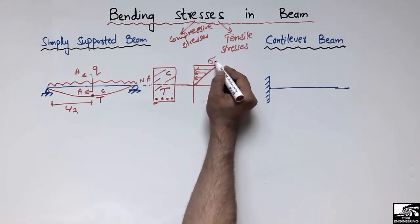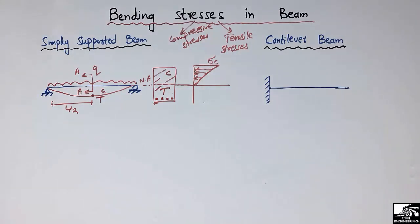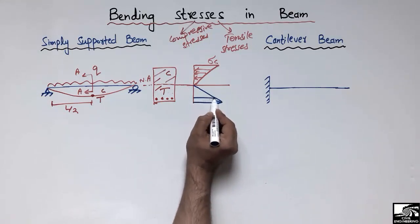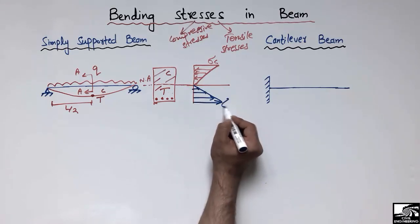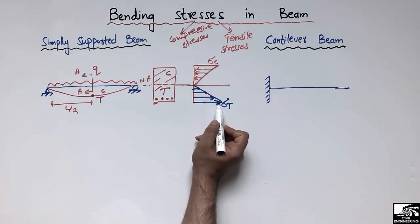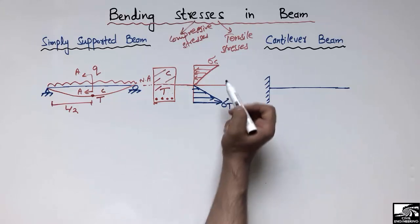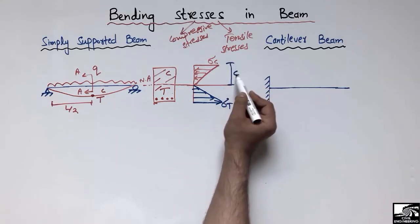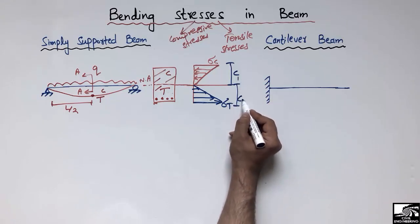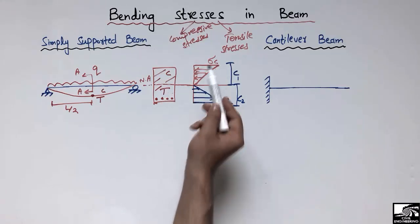We represent the compressive stresses as σ_C and the tensile stresses as σ_T. The maximum tensile stresses occur at the extreme bottom of the beam and the maximum compressive stresses occur at the extreme top of the beam. The distance from the neutral axis to the top of the beam is called C1 and to the bottom is called C2.